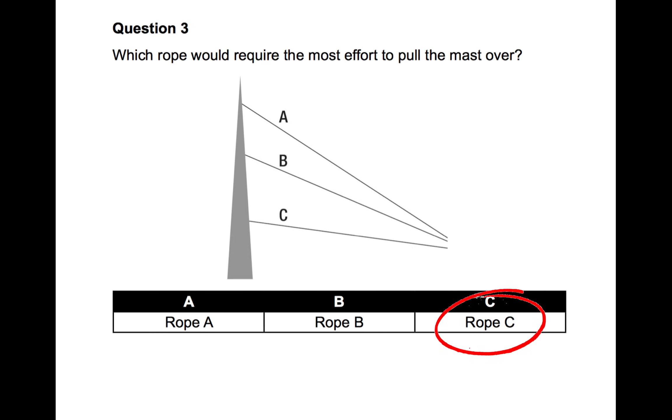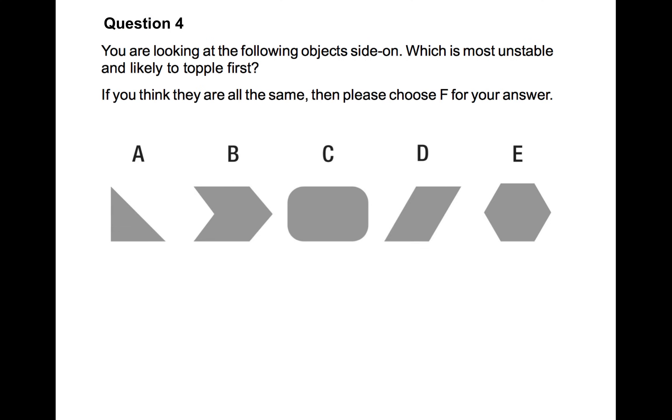Question number three. This is a different kind of mechanical comprehension test. And it's based on leverage. Which rope, A, B or C, would require the most effort to pull the mast over? And the answer is C. Now it will be easier to pull it down with rope A. But the one that requires the most effort to pull the mast over is C.